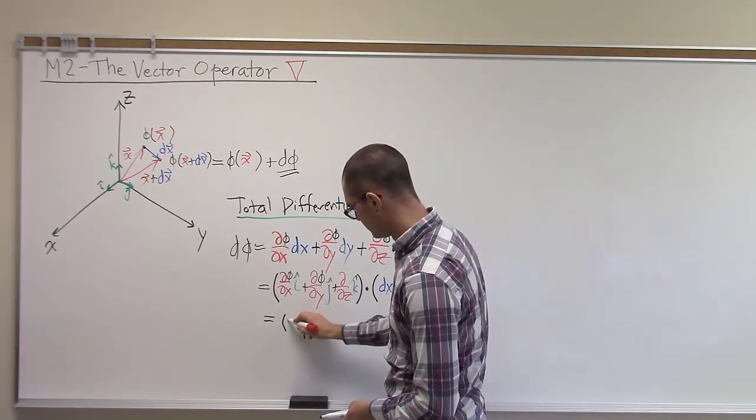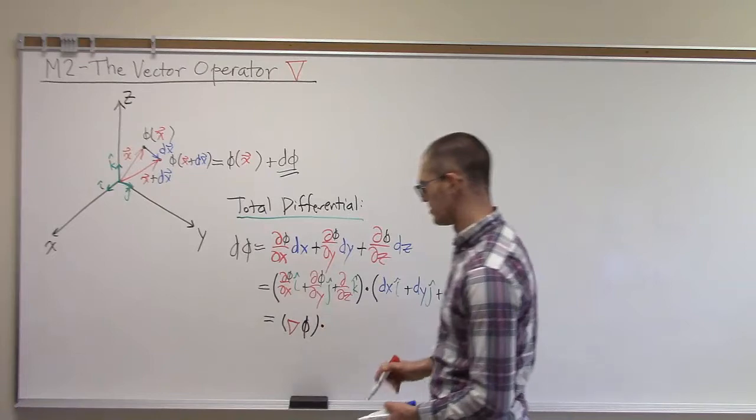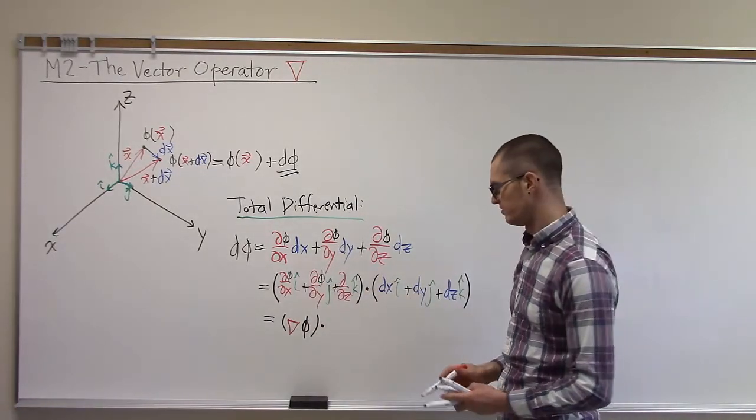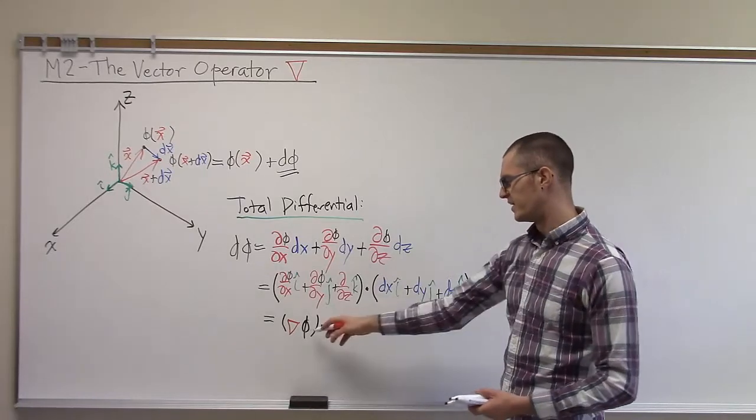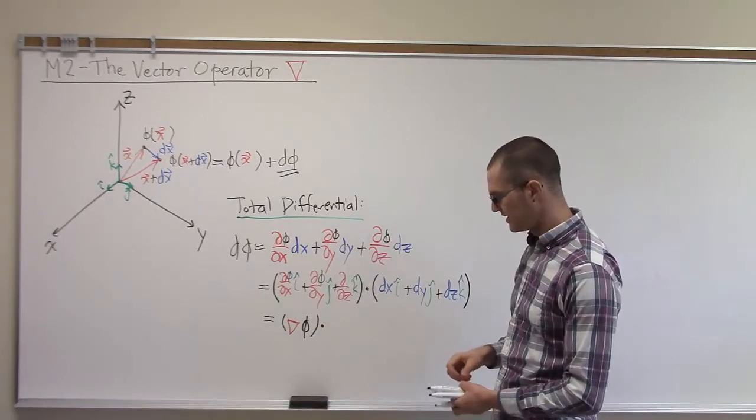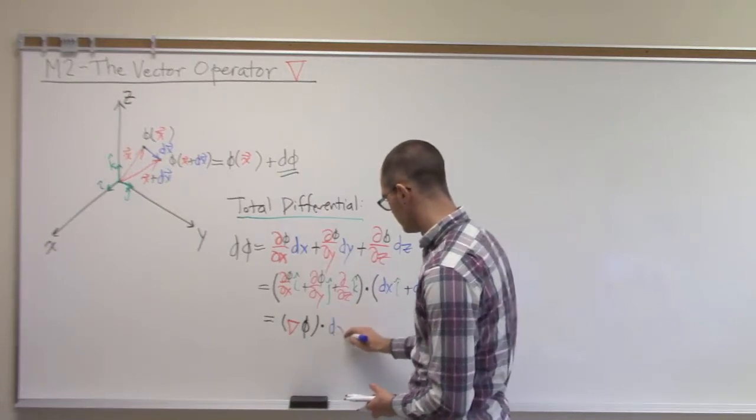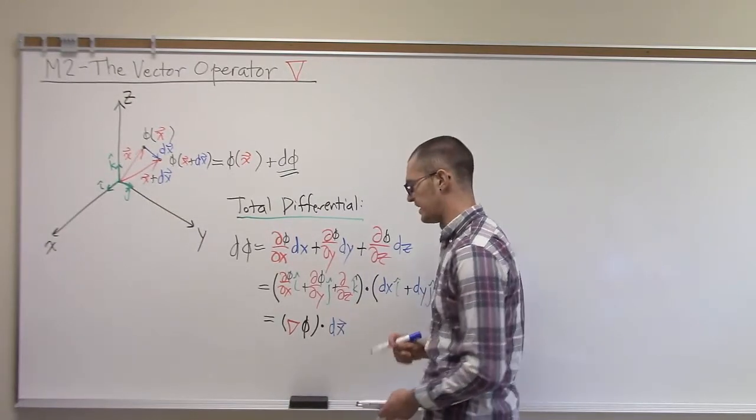We can say that this is some sort of symbol representing this vector of partial derivatives multiplied by phi, post multiplied by phi, and then dot product with the dx.